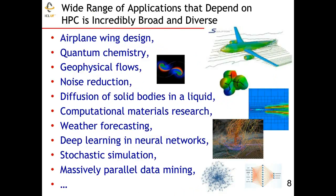Computational science through high-performance computing provides a better understanding of what's going on around us and a wide range of applications. From airplane wing design through geophysical flows, diffusion of solid bodies and liquids, weather forecasting, deep learning, and massively parallel data mining — they can all be tackled and understood in a better way by using high-performance computing.